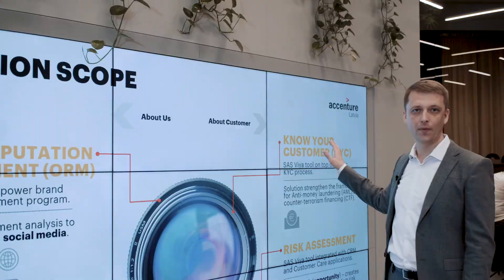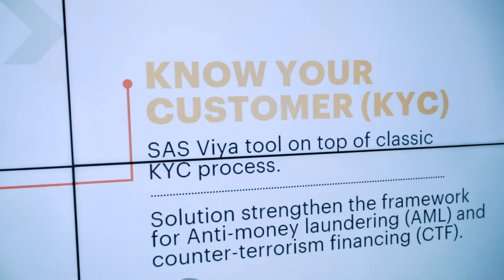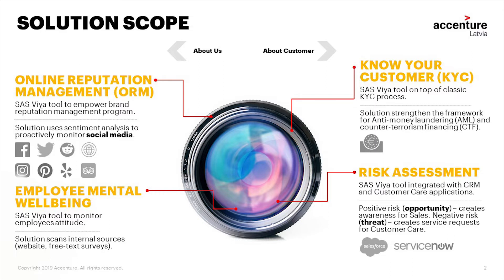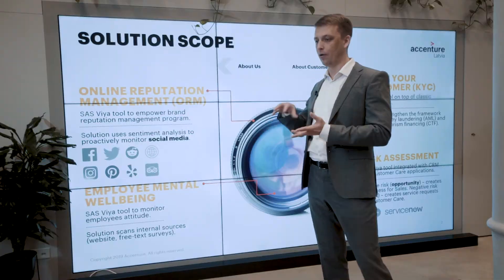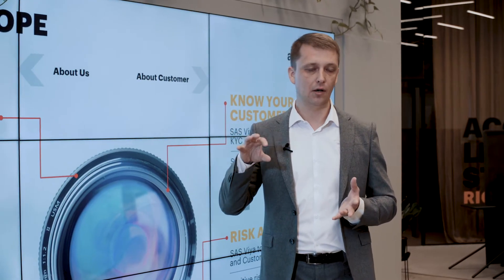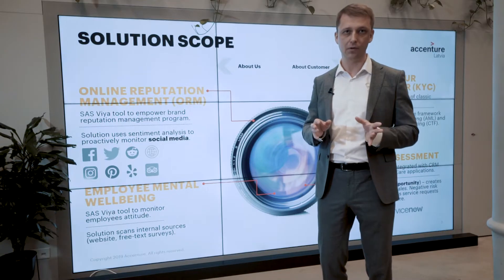Scenario number three is built for security. It's on top of the classic know-your-customer process and it empowers frameworks for anti-money laundering and counter-terrorist financing by online monitoring of social buzz about our customers — who is connected to which political party, or who is connected to some strange institution or to a specific person.